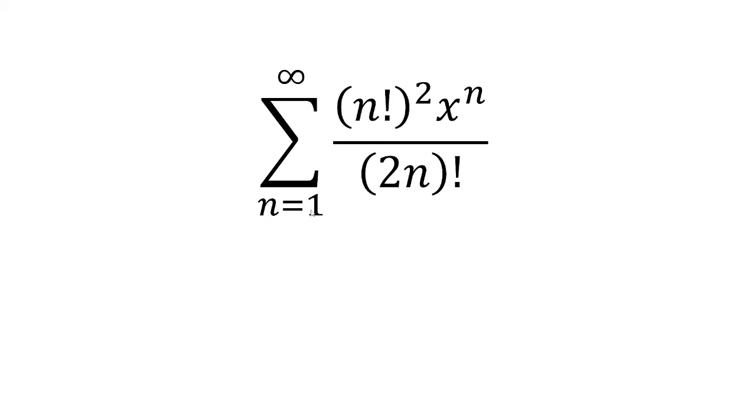In this video, we're given the sum from n equals 1 to infinity of n factorial squared times x to the n over 2n factorial. We want to find the radius of convergence.